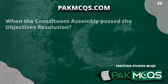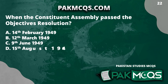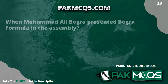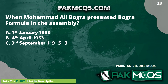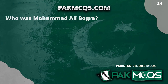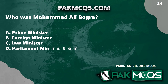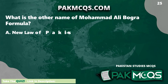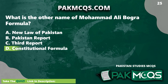When did the Constituent Assembly pass the Objectives Resolution? 12th March 1949. When did Muhammad Ali Bogra present the Bogra formula in the Assembly? 7th October 1953. Who was Muhammad Ali Bogra? Prime Minister. What is the other name of the Muhammad Ali Bogra formula? Constitutional formula.